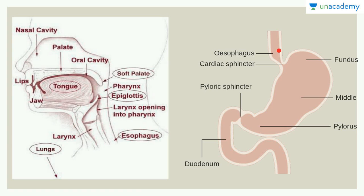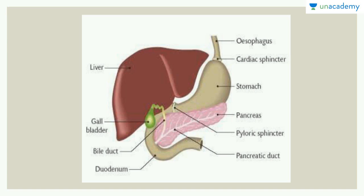Here we have the esophagus and then the cardiac sphincter. Sphincters control the entry and exit of particles — in this case, the food bolus. As the food bolus moves, it enters the fundus region, which is the topmost part of the stomach. The middle region is known as the cardiac region, and the lowermost is the pylorus. The pylorus terminates into the duodenum, passing through the pyloric sphincter.